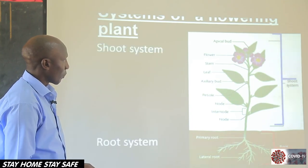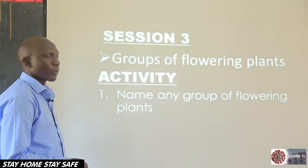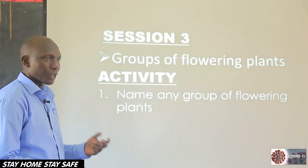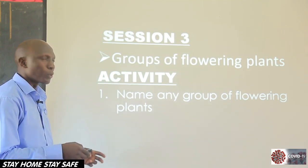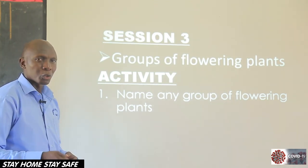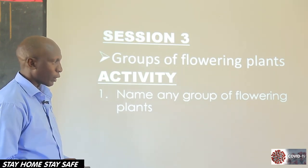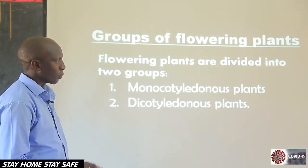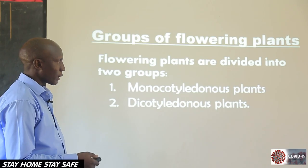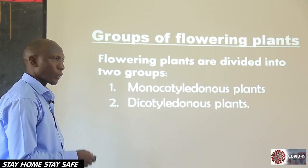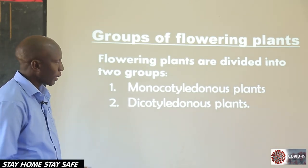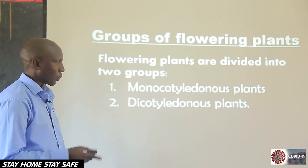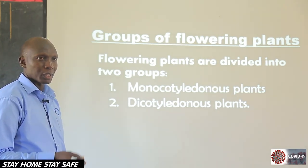Then we can look at the groups of these flowering plants. How would we classify flowering plants? We saw the non-flowering plants and how they are classified. Now today we are looking at the flowering plants — how would we group them? The flowering plants are divided into two groups: they can be monocotyledonous plants or they can be dicotyledonous plants. When you talk about the prefix 'di', it means two, and 'mono' means one.